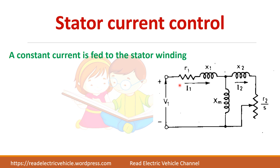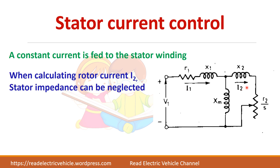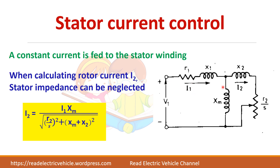We are applying a constant current I1 to the stator winding. We want to calculate the torque equation and how torque depends upon the stator current, so that we can control the speed of the induction motor. To do that, let us calculate the rotor current first. While calculating rotor side parameters, we can neglect the stator reactance. Applying the current division rule, the rotor current I2 equals I1 times Xm divided by the square root of (R2/S)² plus (X2 + Xm)².